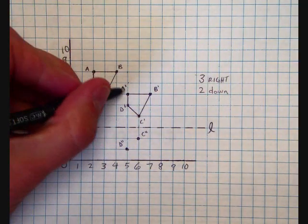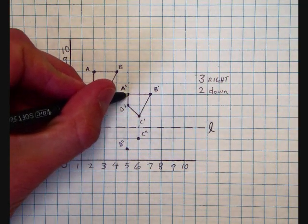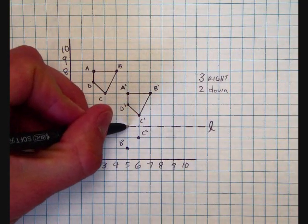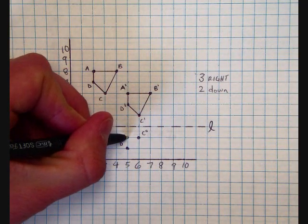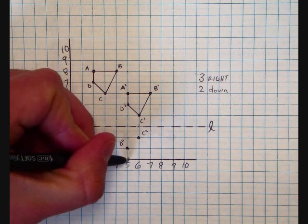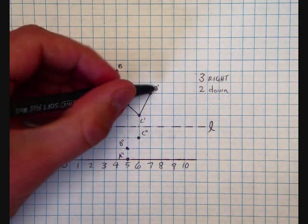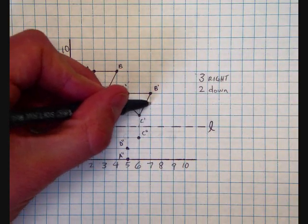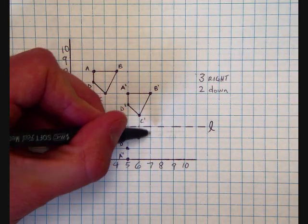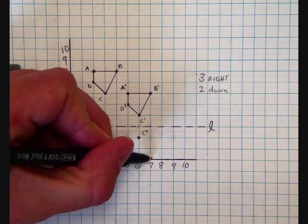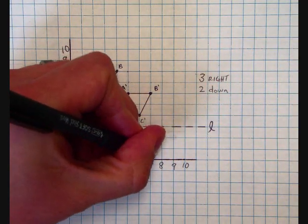Next we'll do A. A is 1, 2, 3 above. And A prime prime will be 1, 2, 3 below. It will be right on our x-axis here. And then finally, B is also three away. 1, 2, 3 above. So it should be 1, 2, 3 down. This is our B prime prime.